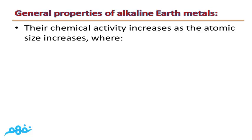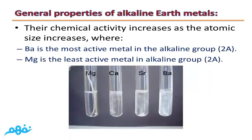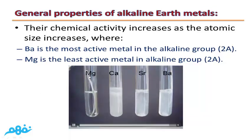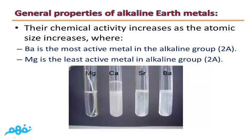Their chemical activity increases as the atomic size increases. Barium is the most active metal among alkaline earth metals, while magnesium is the least active. As demonstrated with four test tubes containing magnesium, calcium, strontium, and barium, the number of hydrogen bubbles in the case of barium is greater than strontium, which is greater than calcium, which is greater than magnesium. So magnesium is considered the least active metal in the alkaline earth group.